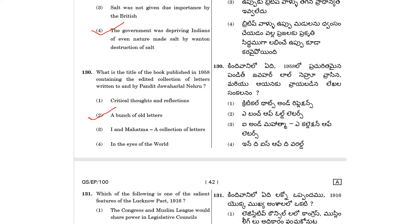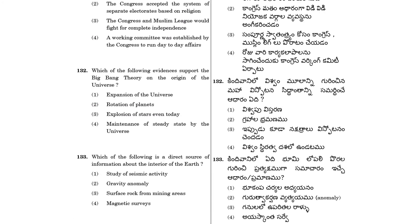Question 131: Which of the following is one of the salient features of the Lucknow Pact 1916? The Congress accepted the system of separate electorates based on religion. So 131, option 2 is the answer.